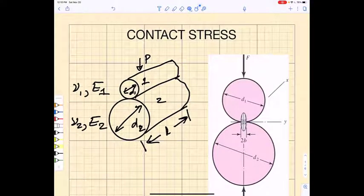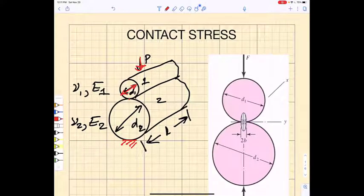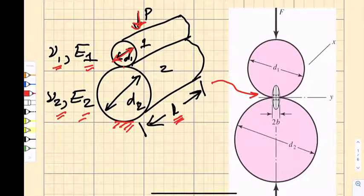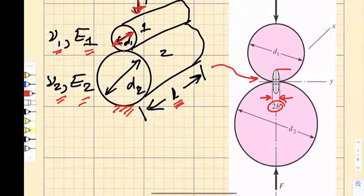To determine what the contact stresses are when two teeth are in mesh, we need to go back to Chapter 3 in Shigley and look at what happens when we press two solid cylinders together. In the most general case, we constrain the bottom side of one cylinder and apply a load to the upper cylinder. Cylinder one has diameter d1 and cylinder two has diameter d2, with different Poisson's ratios and elastic moduli. As we push them together over contact length L, we develop a flat spot and a parabolic stress profile.